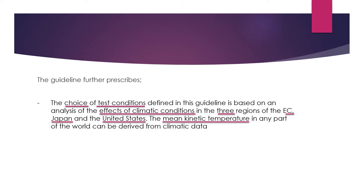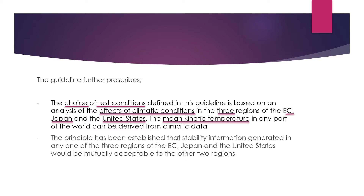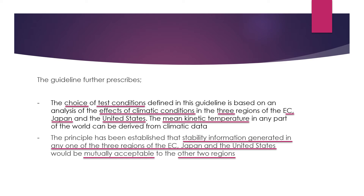Mean kinetic temperature is a tricky subject — you have to research it, as there is a calculation involved. The principle has been established that stability information generated in any one of the three regions of the EC, Japan and United States would be mutually acceptable to the other two regions. That means data generated in any one of these three regions will be accepted by the other two for their use.